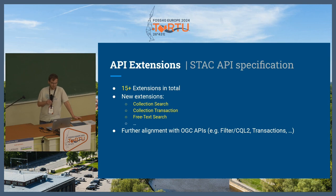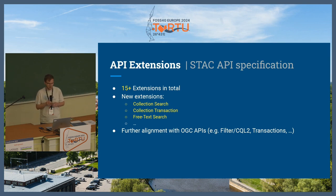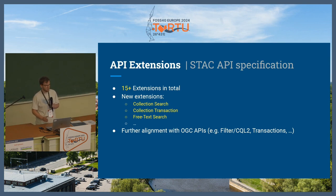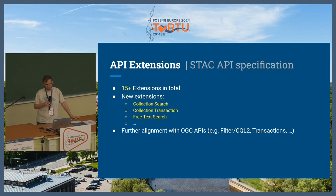There are 15 or 16 API extensions right now. The new ones are very collection-related — the focus in STAC before was more on item search, but now there is collection search as well. There is collection transactions, which means you can update collections via HTTP API — change the keywords, description, title, or similar. Free text search was also added based on OGC API Records, which you can use to freely search any text through the API. We are waiting for further changes in OGC API specs to make the filter and transactions stable, and then we will follow and adopt that as well.